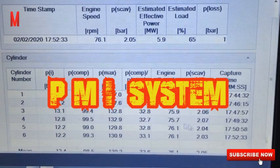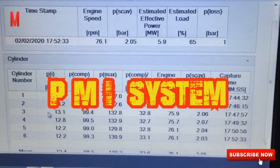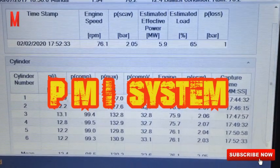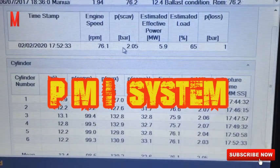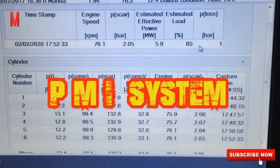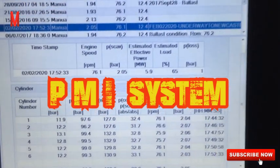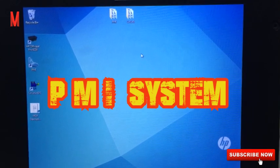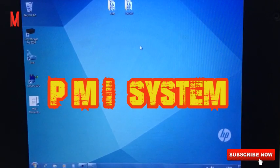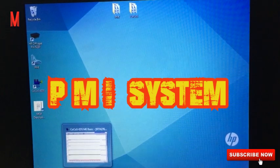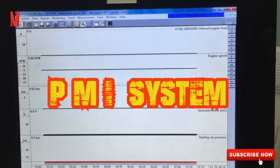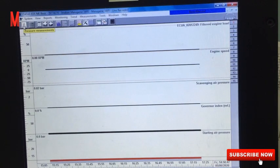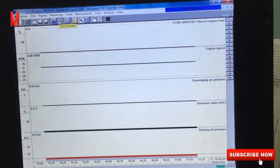Today we're going to talk about the PMI system, the pressure monitoring of the main engine. So what is PMI? The PMI system is designed for the main engine electronic system. It is designed to provide engineers and maintenance technicians on board ships and power plants with a computerized tool for cylinder pressure measurements on two and four-stroke diesel engines.